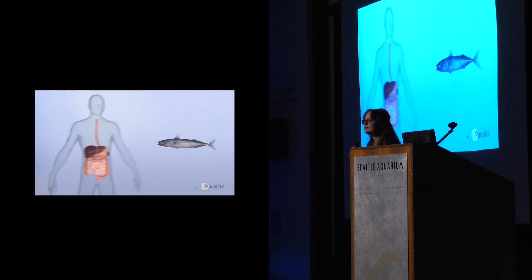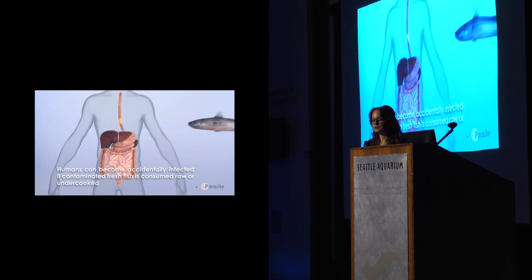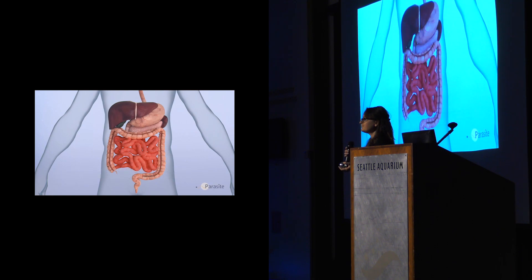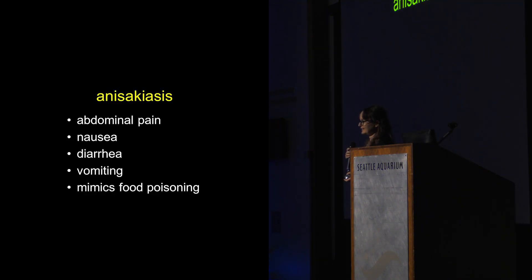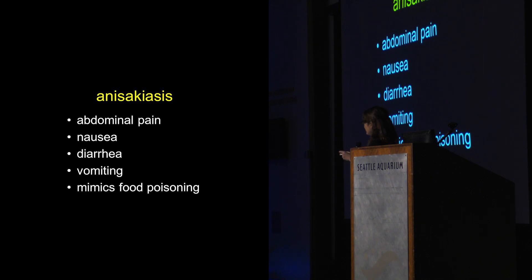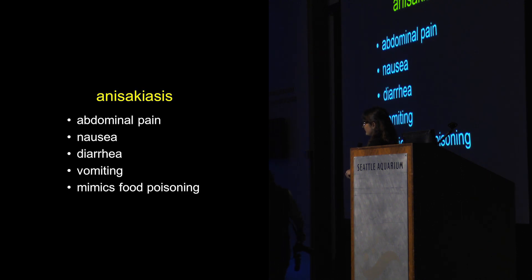Humans become involved when we accidentally consume uncooked or undercooked fish containing these Anisakid larvae. When these parasites wind up in the human intestinal tract, we call that disease Anisakiasis. Symptoms include abdominal pain, nausea, diarrhea, and vomiting — generally the symptoms mimic food poisoning. My guess is that at least a couple of people in the audience tonight have gotten sick from eating sushi and called it food poisoning, but actually had Anisakiasis and didn't know it.